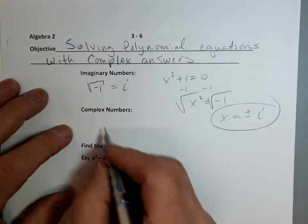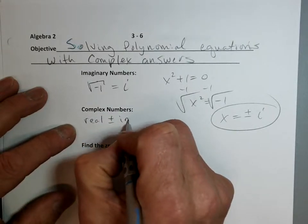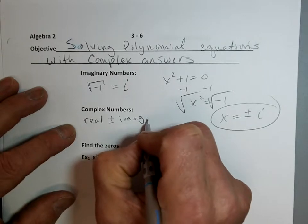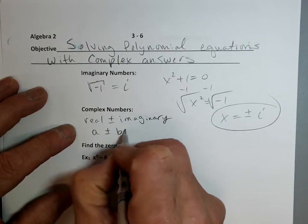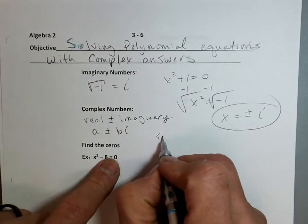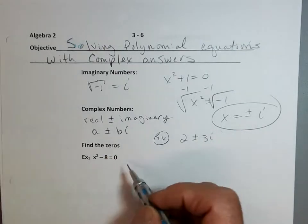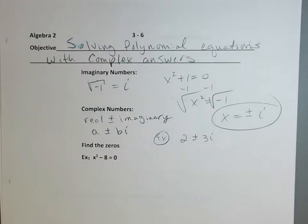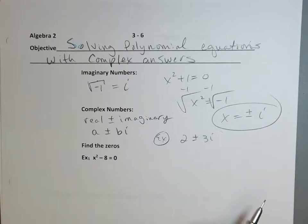A complex number is going to be a real plus or minus an imaginary — the form a plus or minus bi. A is any real number, so for example 2 plus or minus 3i is a complex number. Student question: is e an imaginary number? No, e is a real number like pi — it's irrational, meaning it goes on forever and never repeats and can't be written as a fraction.